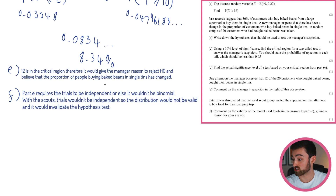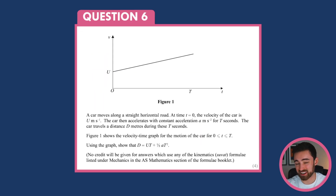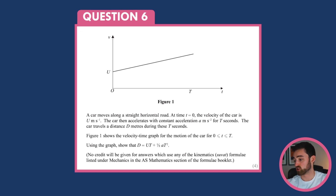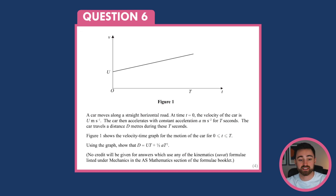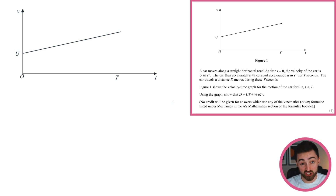Now we're onto mechanics — the home straight. Question 6: a car moves along a straight horizontal road. At time t = 0, the velocity is u, and it accelerates with constant acceleration a for t seconds, travelling distance d. Using the velocity-time graph, show that d = ut + ½at². No credit will be given for answers using kinematic SUVAT formulas directly — you need to derive it. The key information is that the distance travelled is the area under the velocity-time graph.